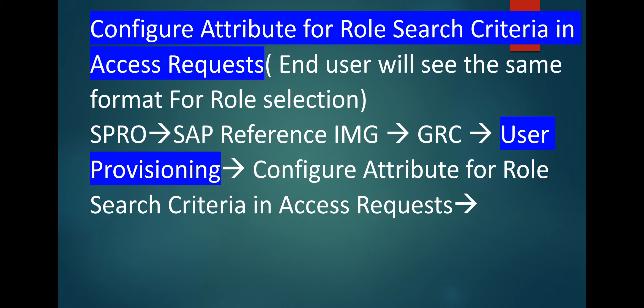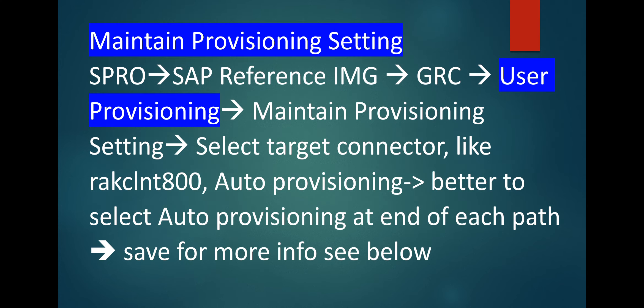Next, configure attribute for role search criteria and access request — the end user will see the same format for role selection. Go to user provisioning > Configure Attribute for Role Search Criteria in Access Request. Next is maintain provisioning setting. Go to user provisioning > Maintain Provisioning Setting, select target connector like RAKCL NT800 system name. Auto provisioning — better to select auto provisioning at the end of each path.